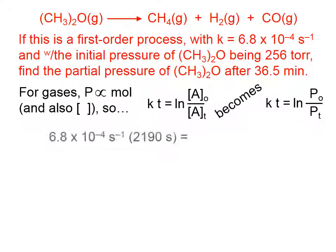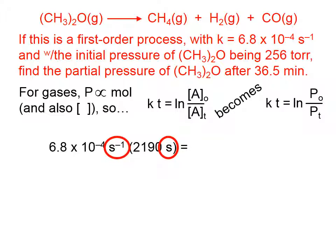Let's put in what we know. The left side of this equation is k times t. The rate constant k is given. Notice that I've changed 36.5 minutes into seconds so that the units of my rate constant will match the unit on time. The right side is the natural log of the original pressure, 256, divided by the pressure at this later time, which we don't know.